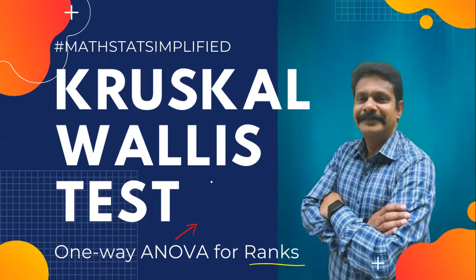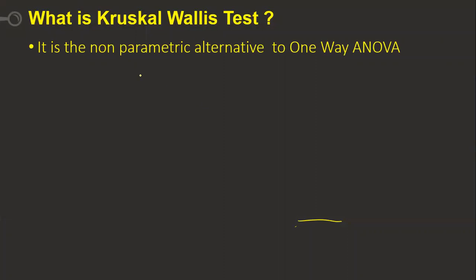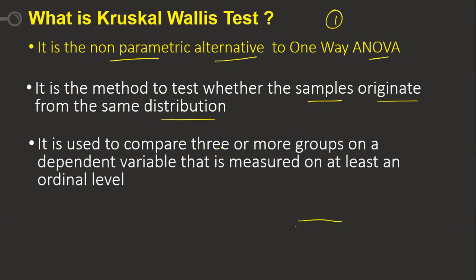What is a Kruskal-Wallis test? It is a non-parametric alternative to one-way ANOVA — this is point number one to remember. It is a method to test whether the samples originate from the same distribution. It is used to compare three or more groups on a dependent variable that is measured on at least an ordinal level.